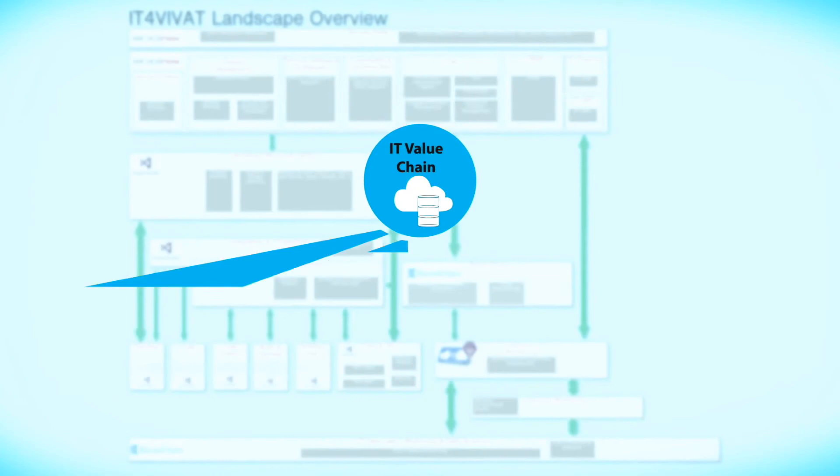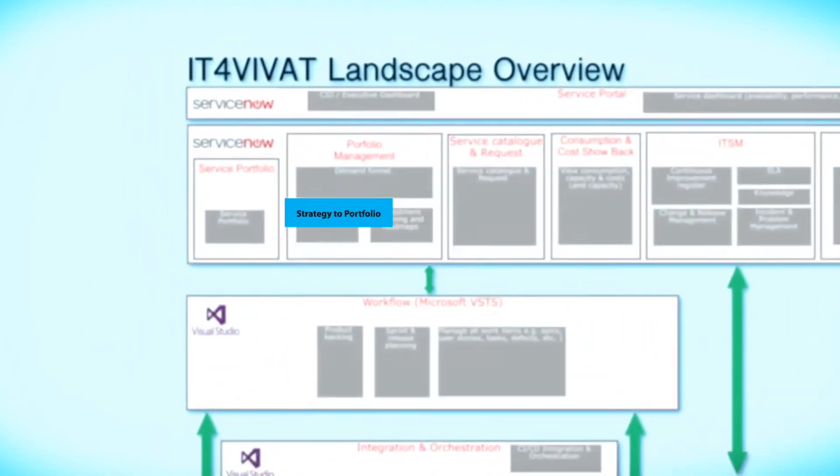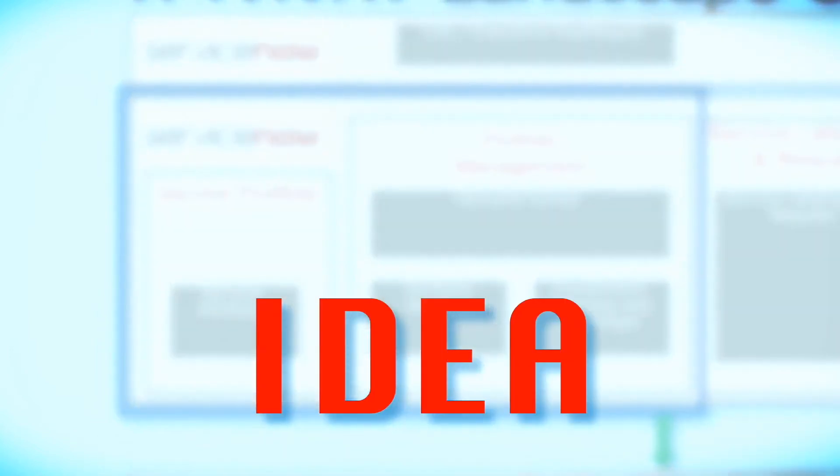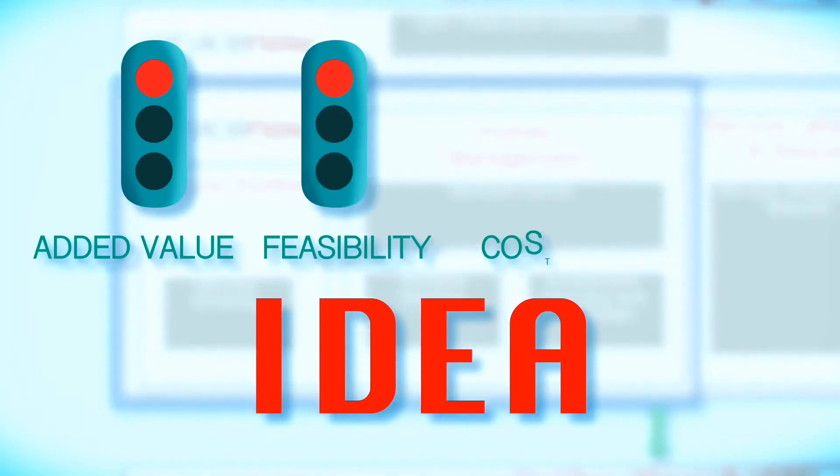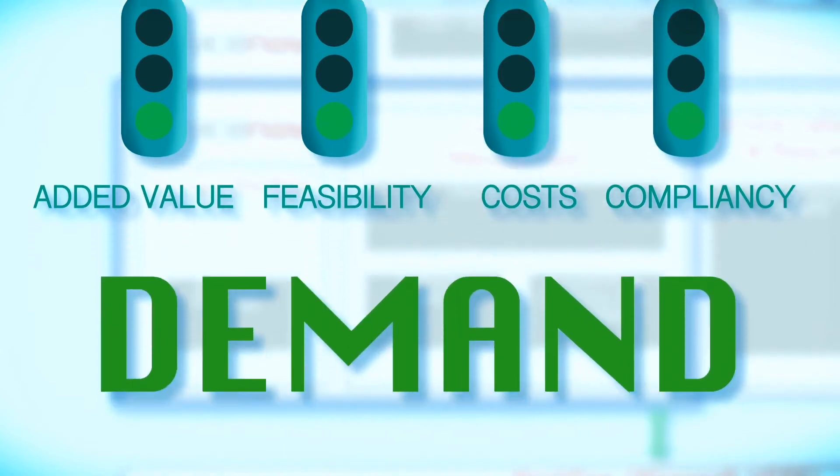The first value stream within IT4IT is strategy to portfolio. Delivering the right services by ensuring a good match between the IT portfolio, VIVAT's strategy and the requirements of the business. New ideas are evaluated first based on criteria such as added value, feasibility, costs and compliance. If all lights are green, the idea becomes a demand, ready to go into the development pipeline.